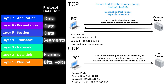If traffic is destined to go to a mail server, the destination port is going to be 25. If traffic is going to SSH to another Linux server, the port is going to be 22. And if you're trying to remote desktop RDP to a Windows computer, what's the destination port going to be? 3389!